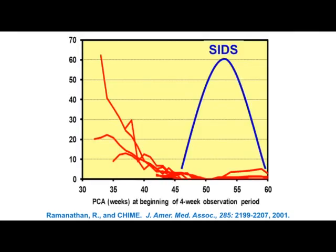One key CHIME finding: SIDS does not occur when apnea occurs. Apneas are not occurring at the age when SIDS occurs — SIDS peaks between two and four months post-conception, while apneas predominantly occur in preterm infants prior to 41 to 42 weeks. This suggests the original apnea hypothesis is likely not correct, and that apneas are not the cause of sudden infant death syndrome.